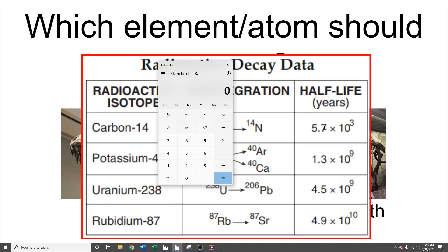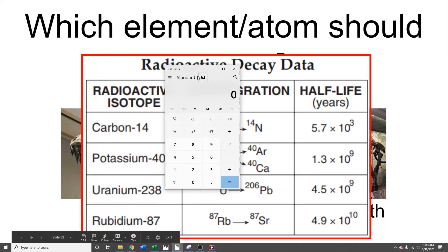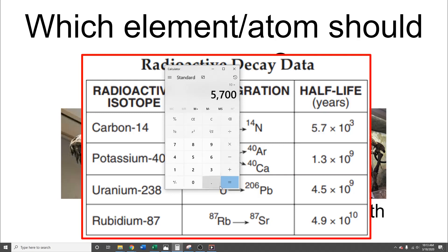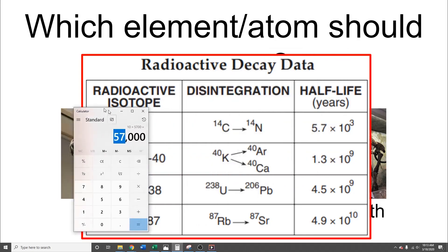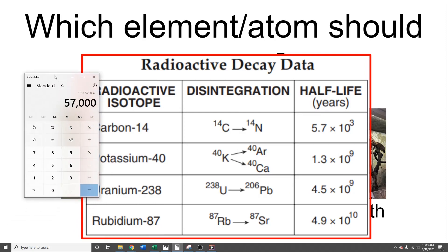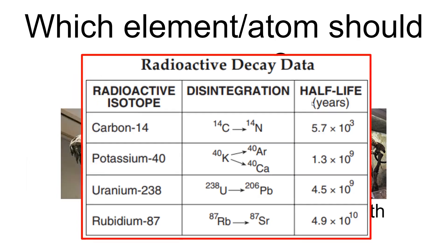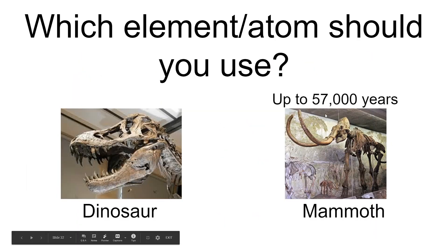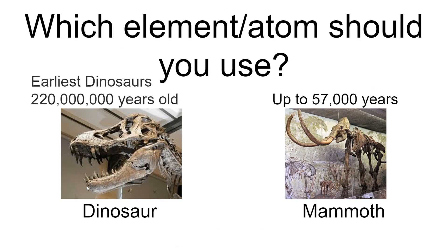After ten half-lives, you're only looking at about 0.097% of the original sample. That means ten half-lives of carbon-14 — 10 × 5,700 — gives a maximum of around 57,000 years. Anything after that, the error is going to be way too large. So you can use carbon-14 for mammoths up to about 57,000 years, but for dinosaurs — which lived 200 to 250 million years ago — you'd need a different isotope.